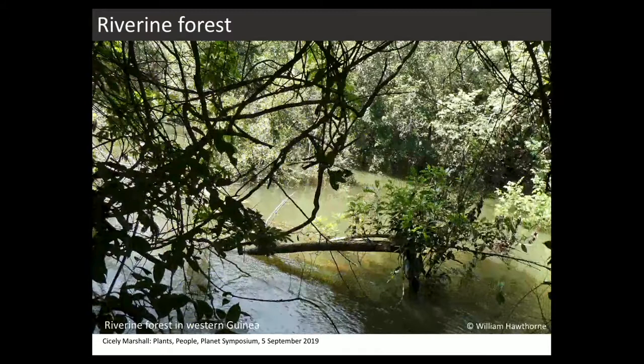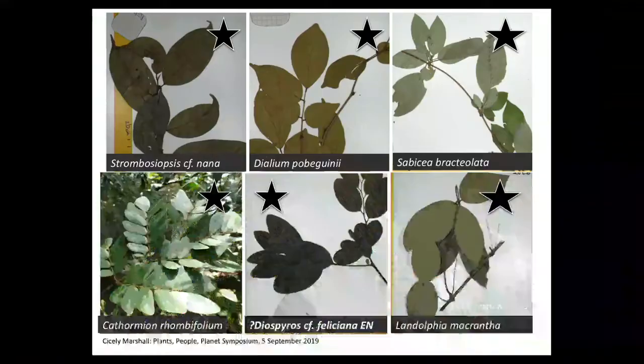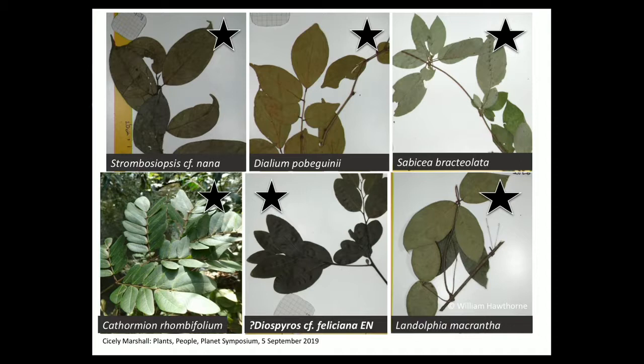The riverine forest — African lowland evergreen rainforest occurring at almost its farthest western extent — is under tremendous pressure. It persists in tiny fragments along rivers, which are being developed for ports, roads, and bridges, and are also targeted for logging and cleared for farming. We found six black star species in this habitat. One species, Stromboseopsis, doesn't look much like its relative and could be a new species. Cothormian rhombifolium is not listed as endangered but is almost restricted to this part of Guinea, with a very sparse distribution in riverine forest only.